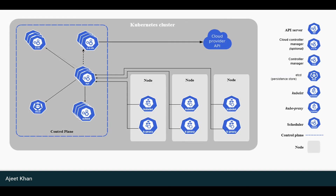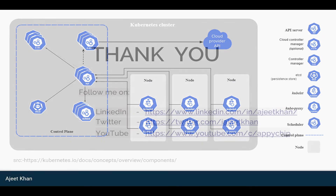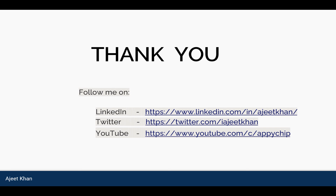We have now gone through all the architecture-related questions. You can visualize the Kubernetes architecture with its components as shown in this diagram — the control plane, the data plane, API, Kubelet, Kube Proxy, and Cloud Controller Manager. I hope these questions helped you in revising the Kubernetes architecture. We will discuss questions on Kubernetes API in the next video. Stay subscribed to receive notifications about upcoming videos. Keep learning!